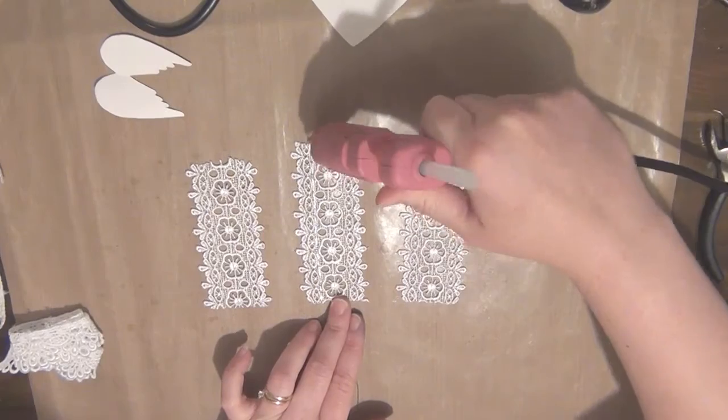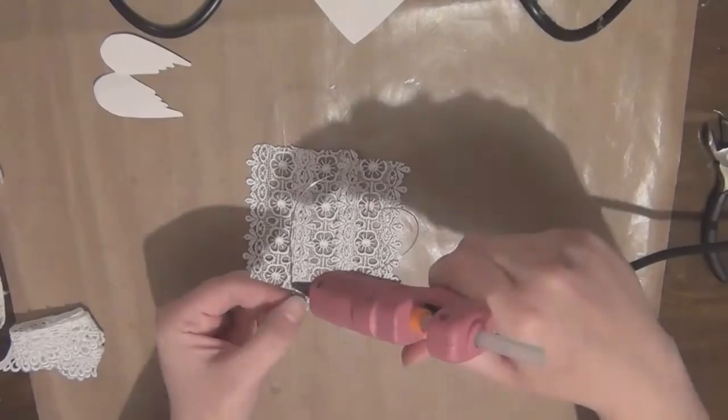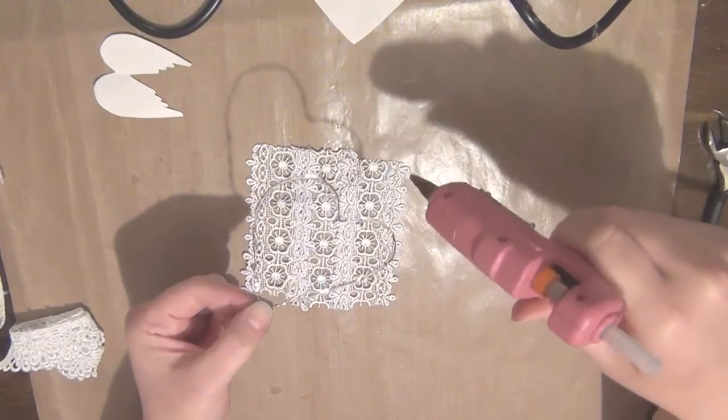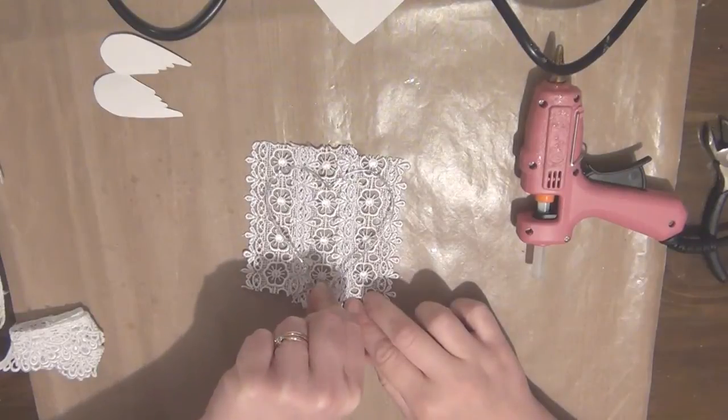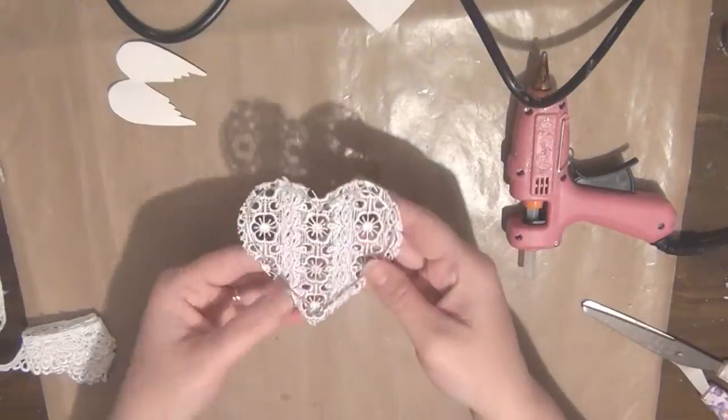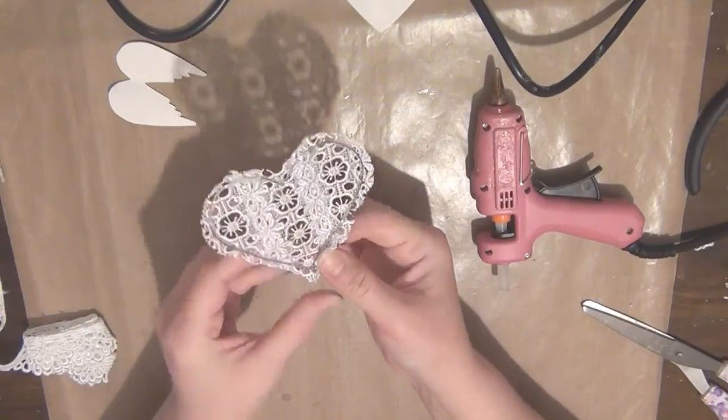Then I'm going to take my heart shape and I'm going to add some glue to it. I just place this right on the lace. As soon as that glue sets, I'll go ahead and trim off the heart all the way around.